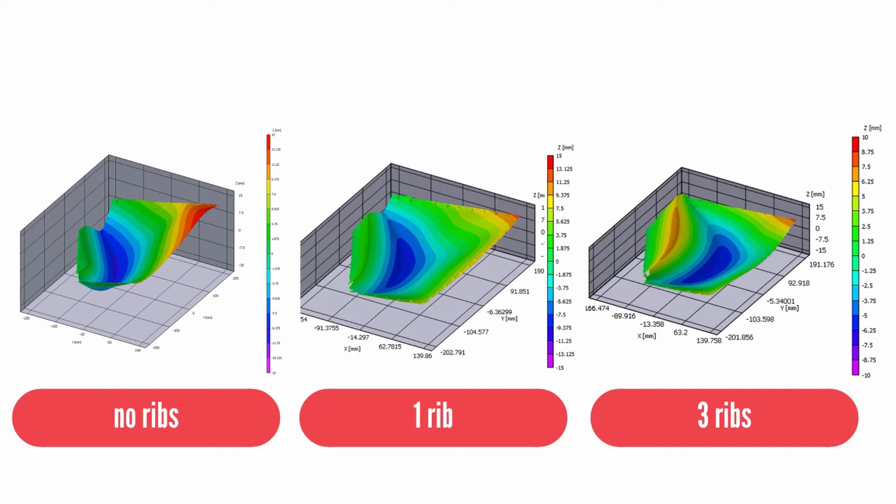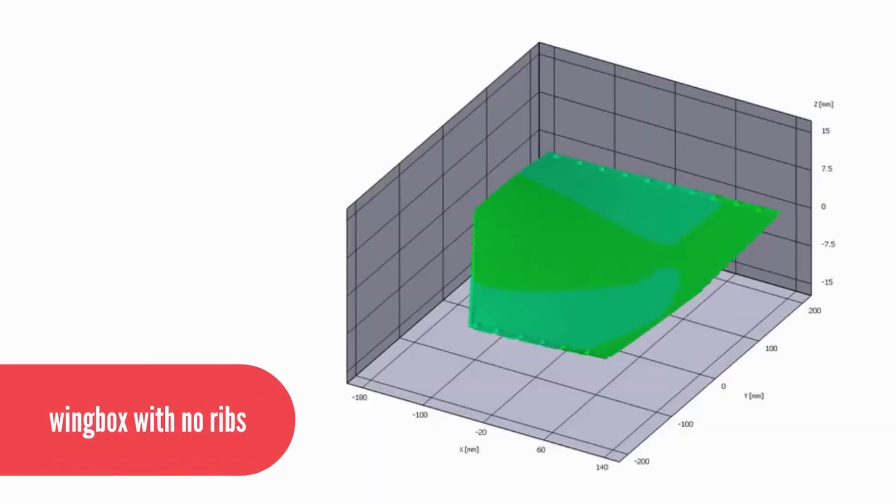If we look at the deformation at failure, the difference becomes clearer. The wing box with no ribs seems to crumple up and there's a large inward dent. Those deformations are pretty big. It wouldn't do well in flight, that's for sure.